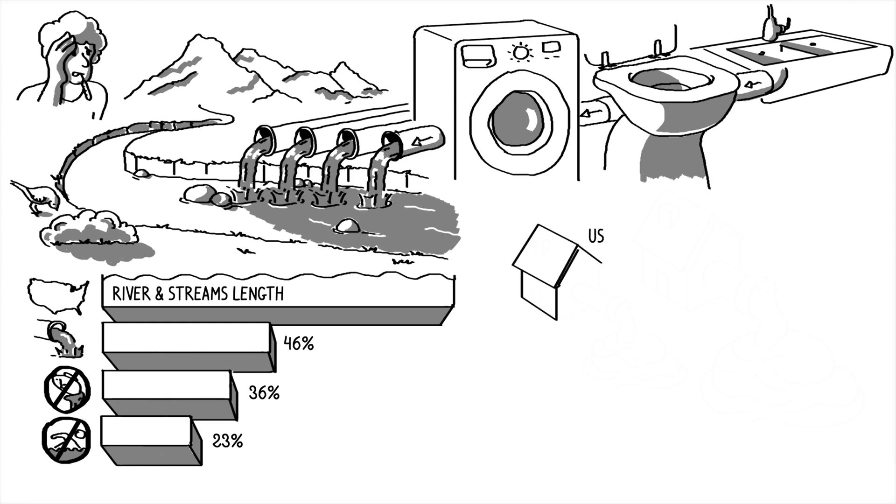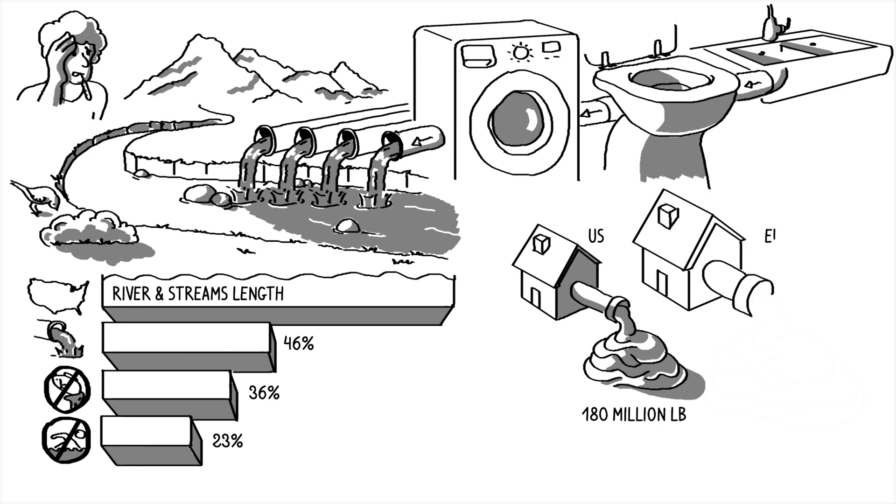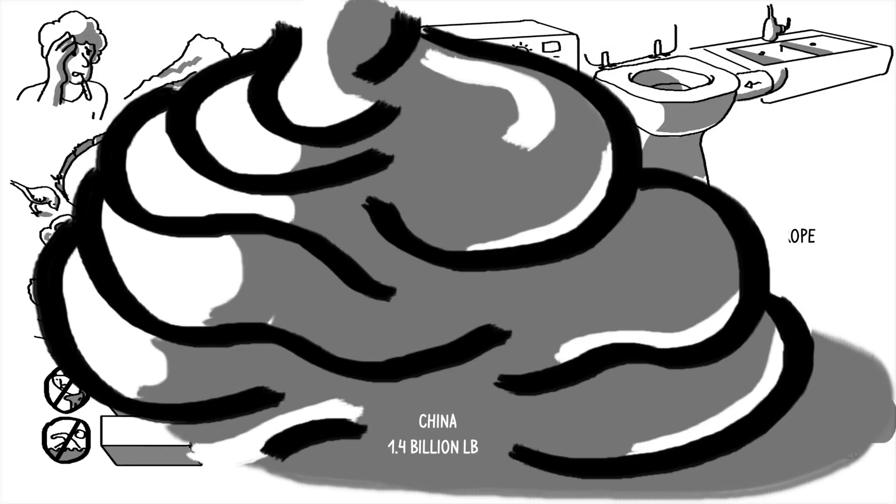In the United States, wastewater from households alone generates 180 million pounds of sludge each day. In Europe, 300 million pounds of sludge are produced daily. Estimates for China are 1.4 billion pounds of sludge each day.